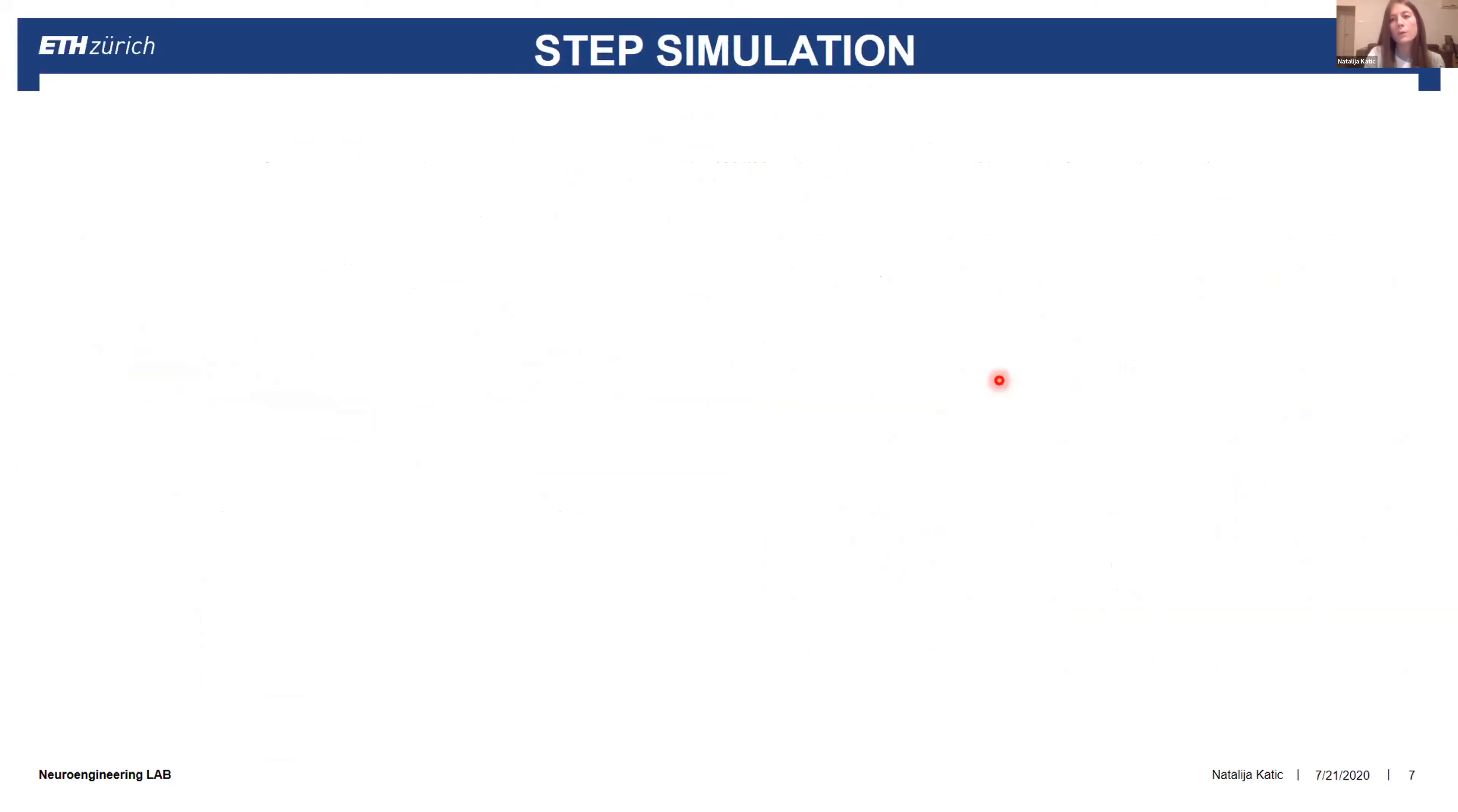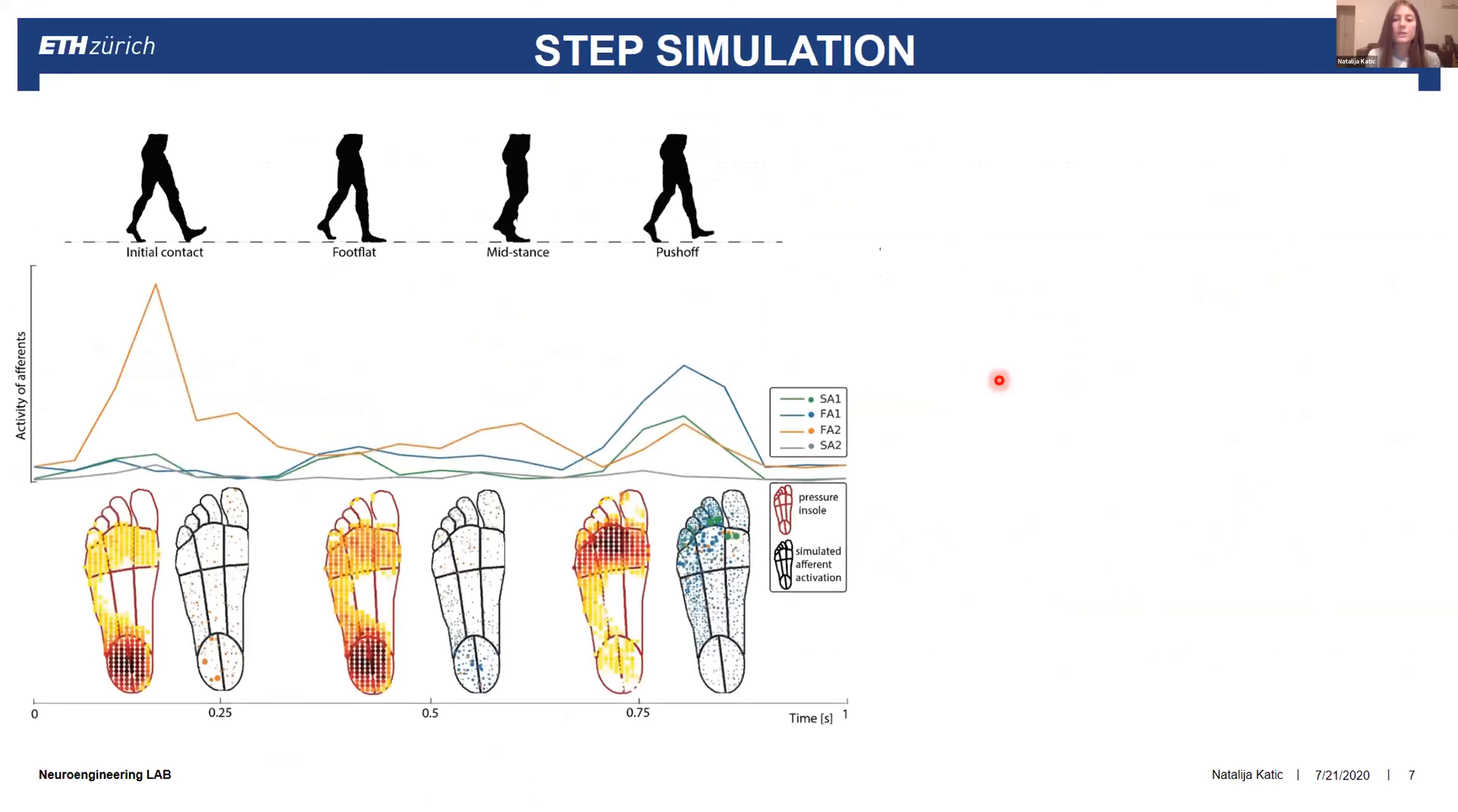We wanted to see how our model behaves in a more natural environment and we used the pressure insole to simulate the step and stimulate walking. We recorded the pressure during walking and used that as an input to our model to see which afferents in which moment are activated during gait.